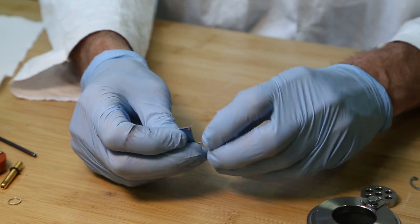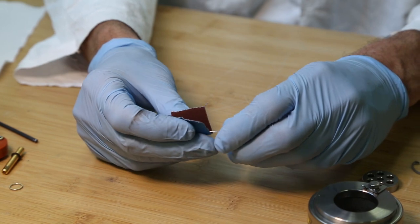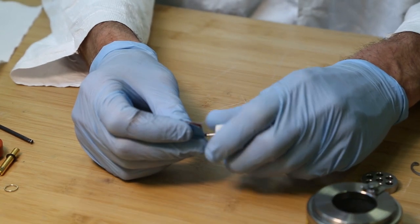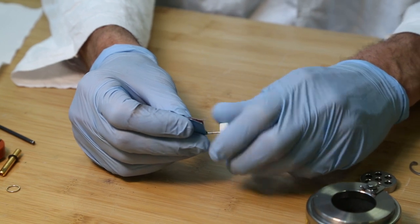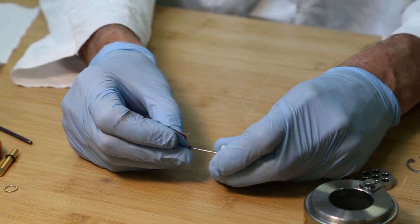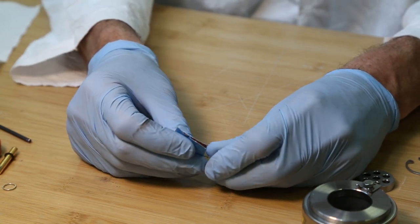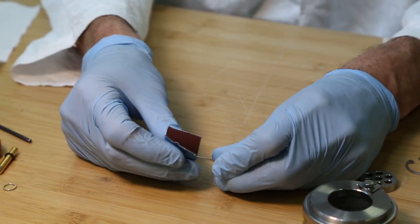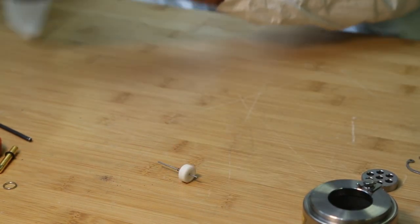We'll just take some sandpaper here and scrub the end of the pin, being careful not to disturb the clip. And again, we want it to be basically shiny and steel-like without any discoloration. That's that.